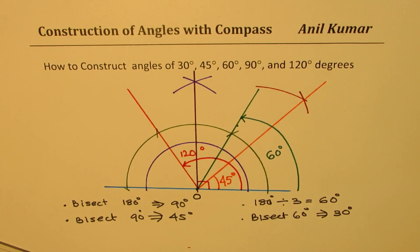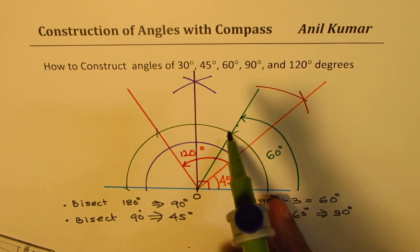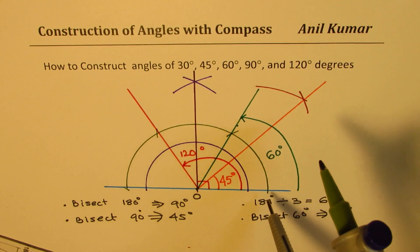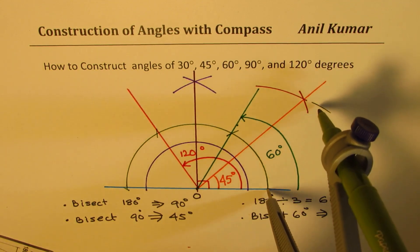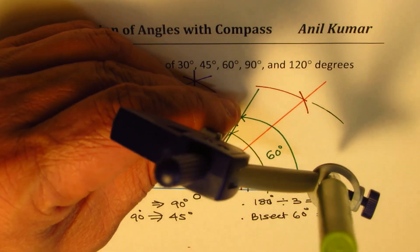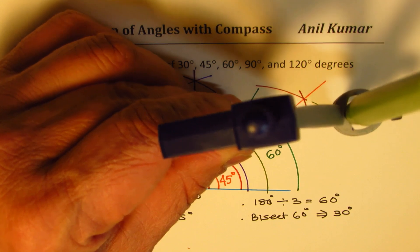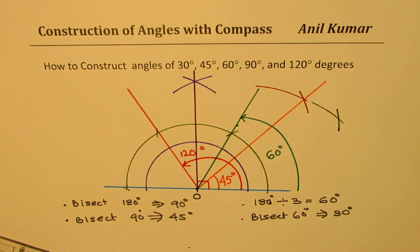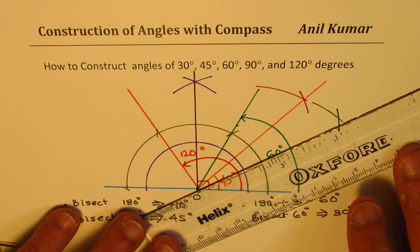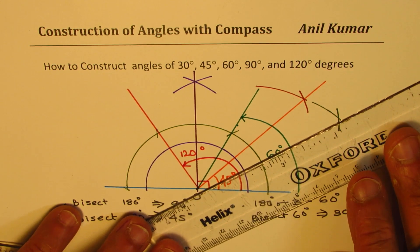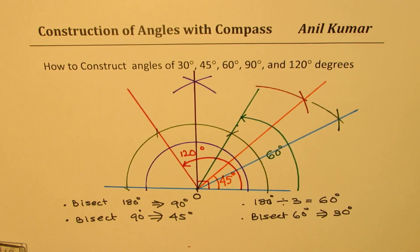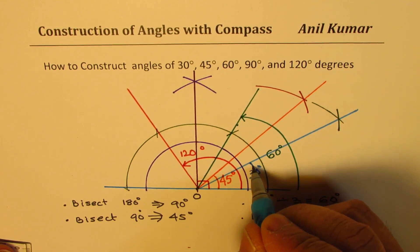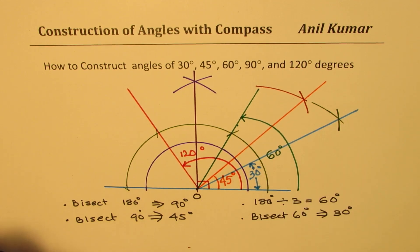Let's bisect the 60 degree angle. We have two points on the arc. We place our compass on one of those points and mark an arc in between, then place it on the other point and cut across. We get a point in between the two. Joining that point to O gives us 30 degrees — half of 60.